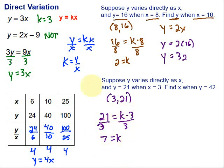So now I know what k is. Plug just the k back in to start with. That's going to be my direct variation equation. y equals 7x. Then it says find x when y is 42.